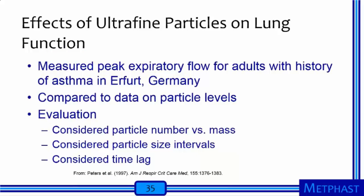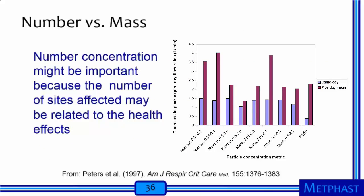One of the first epidemiological studies was by Peters et al. in 1997 on the effects of ultrafine particles on lung function. Investigators measured peak expiratory flow in adults with asthma history in Germany, comparing health effects to particle level data. Their evaluation considered particle number versus mass, particle size intervals, and time lag. Results showed that the number of particles between 0.01 and 2.5 micrometers had a stronger effect than the mass of particles in the same size range, suggesting particle number concentration may be important because the number of sites affected may relate to health effects.